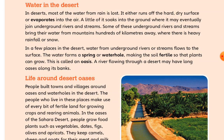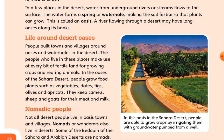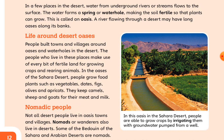Water in the desert. In deserts, most of the water from rain is lost. It either runs off the hard dry surface or evaporates into the air. A little of it soaks into the ground where it may eventually join underground rivers and streams. Some of these underground rivers and streams bring their water from mountains hundreds of kilometers away where there is heavy rainfall or snow. In a few places in deserts, water from underground rivers or streams flows to the surface.